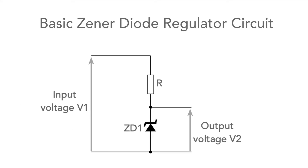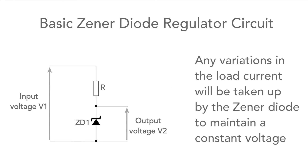The output to the load is taken from the junction of the resistor and the diode. Any variations in the load current will be taken up by the diode as it will always retain the same voltage across it. For our design example we'll assume a 12 volt input and an output of 5.1 volts. 5.1 is a convenient standard value for a Zener diode, and we'll use figures of the load requiring between 5 and 6 milliamps.